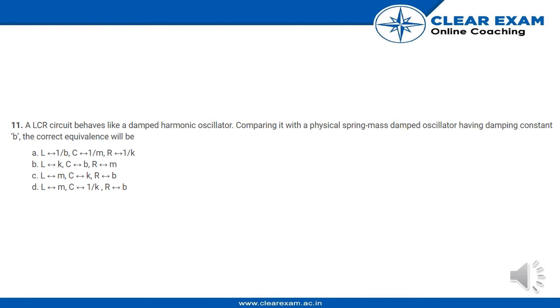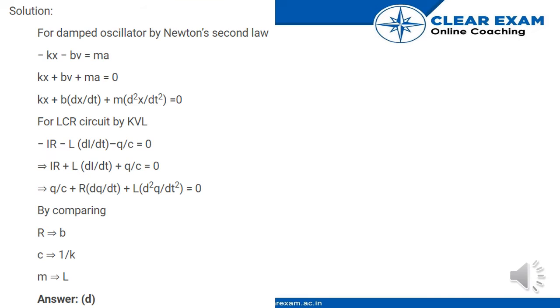having damping constant B, the correct equivalence will be. Now these are the options. Now for the solution: For damped oscillator by Newton's second law, -kx - bv = ma, so we get